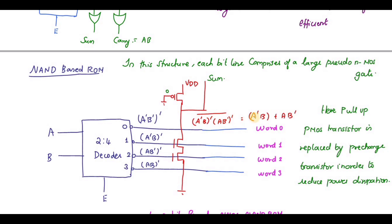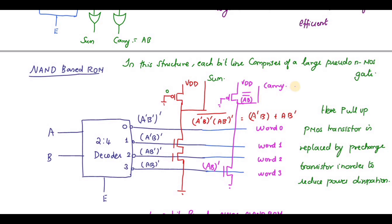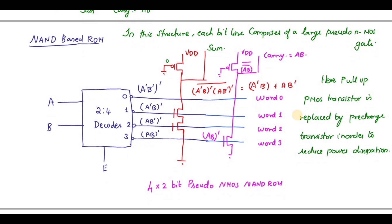Applying De Morgan's law to (A̅B)̄ · (AB̅)̄ gives A̅B + AB̅, which is the Sum (A XOR B). To implement Carry, only one transistor is connected at word line three, giving (AB)̄, and the inverse gives AB, which is the Carry. This structure is called a 4 word-line × 2 bit-line pseudo-NMOS NAND ROM.